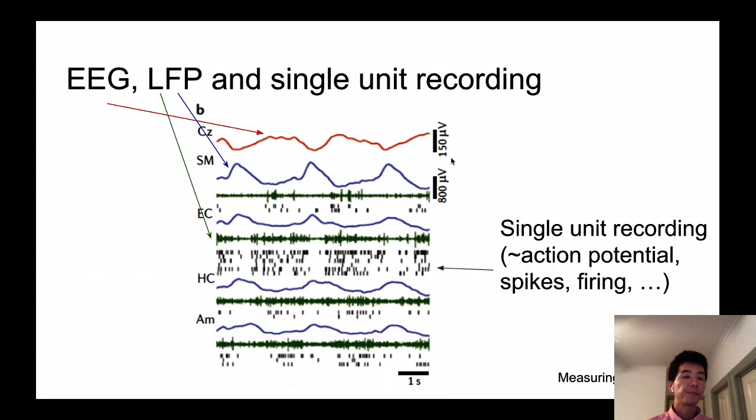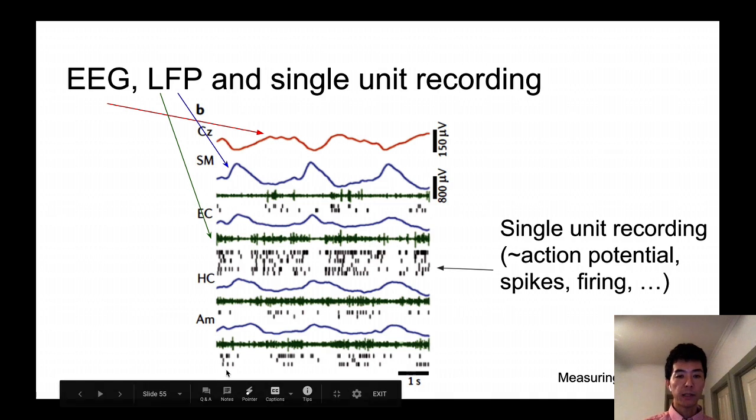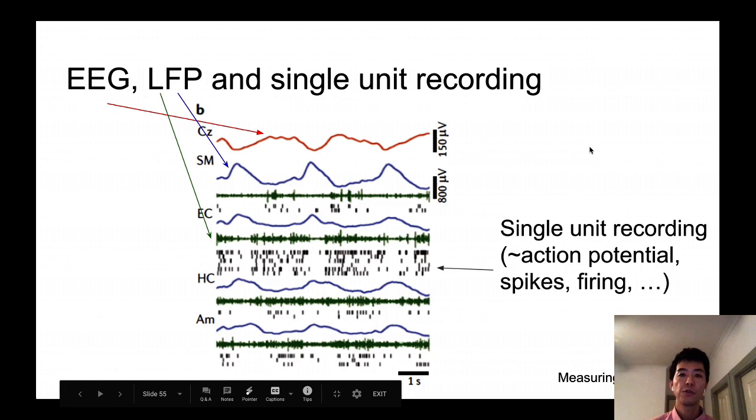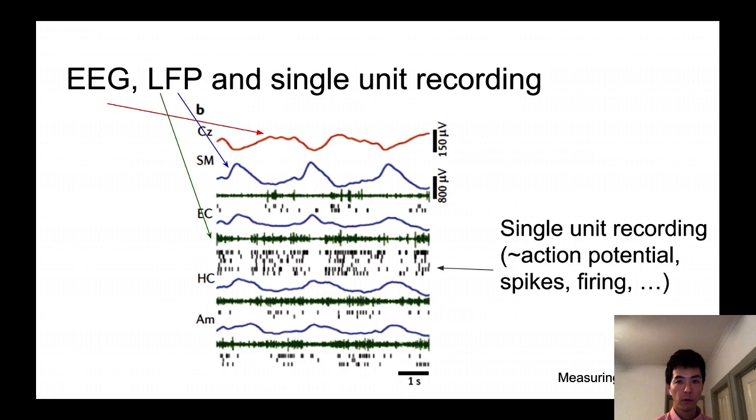And by the way, to see this type of nice signal on the EEG, you need to do some kind of data preprocessing. You do not usually see this very clear signal from just six seconds like this way. You need to do what's called band pass filtering, and I may talk about it in the future, and then see this nice waveform of over 150 microvolts.